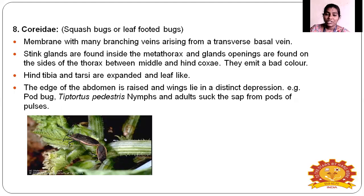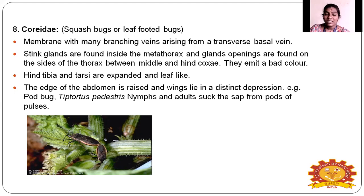Coreidae — the squash bug or leaf-footed bug. The membrane has many branching veins arising from the transverse basal veins. They have a stink gland inside the metathorax, with gland openings on the side of the thorax between the middle and hind coxae, emitting a bad odor when touched. The hind tibia and tarsus are expanded in a leaf shape. The edges of the abdomen are raised and wings lie in a distinct depression. Example: pod bug, Anoplocnemis phasiana — nymph and adult suck sap from pods of pulses.